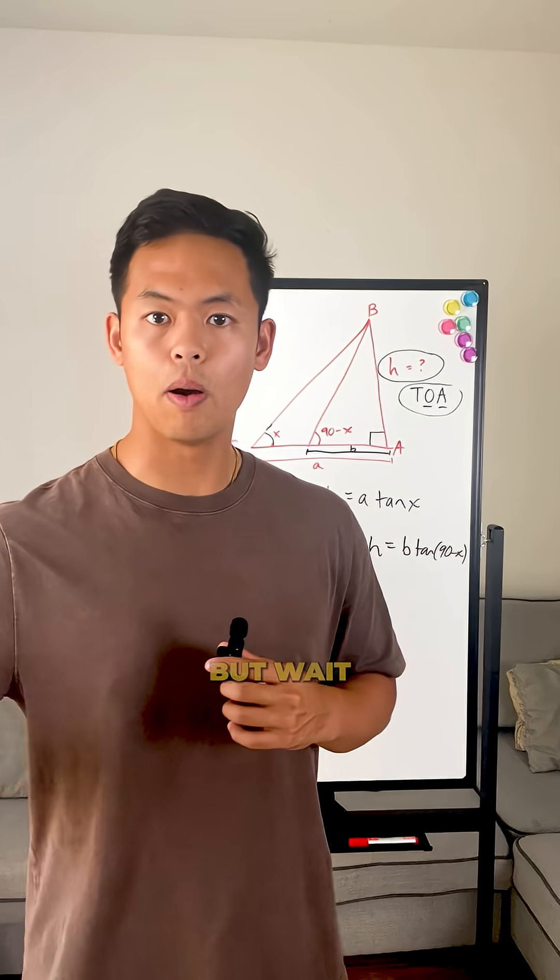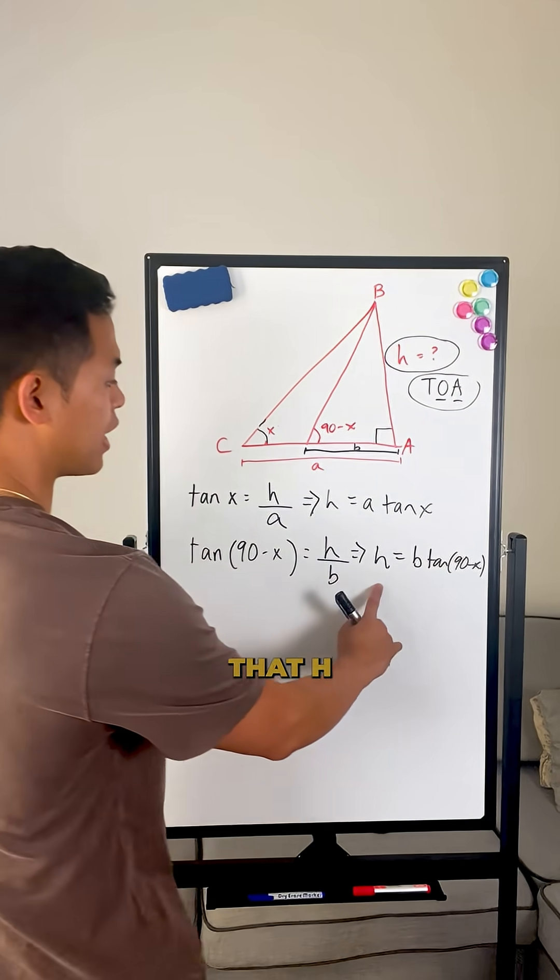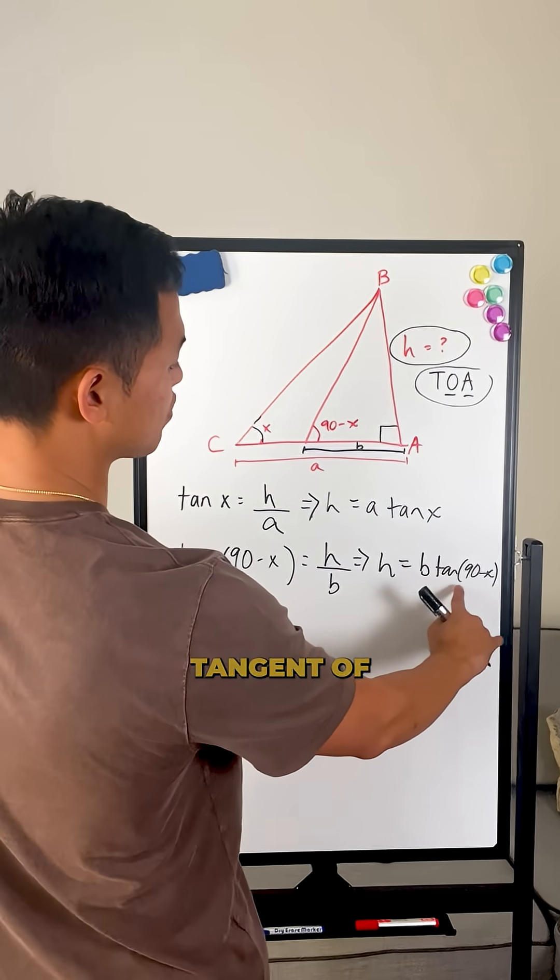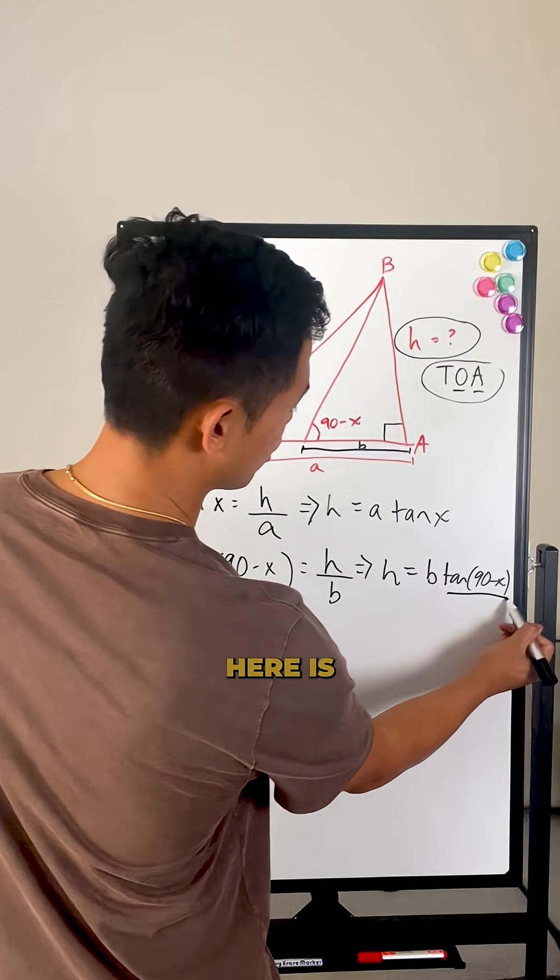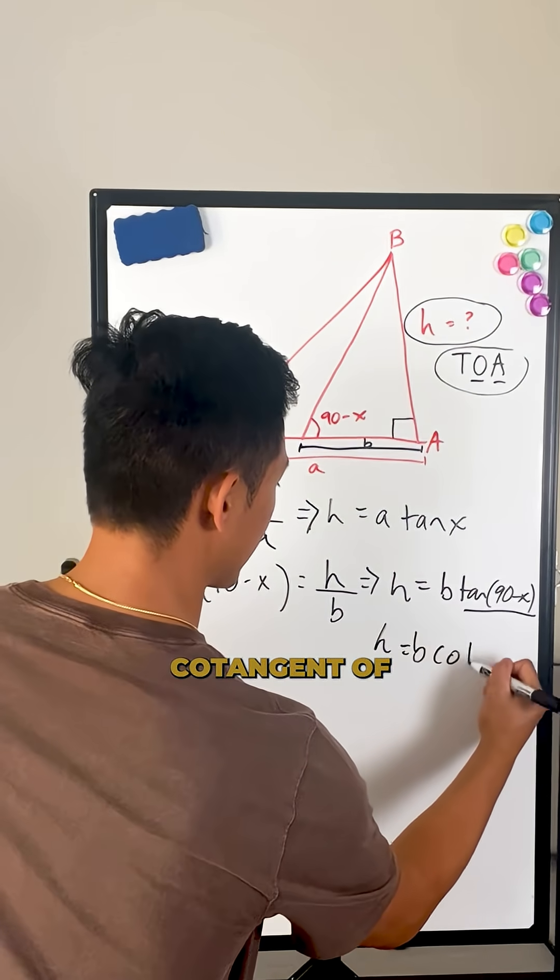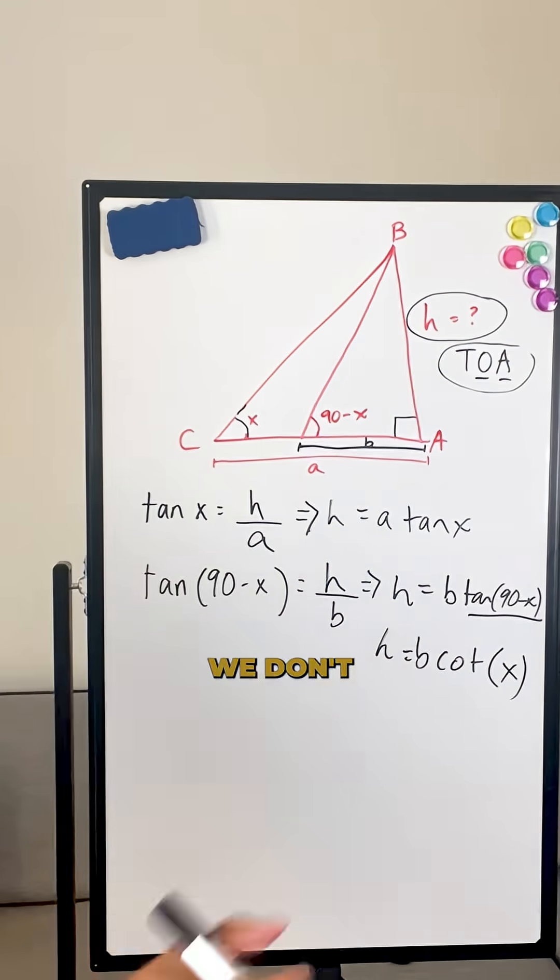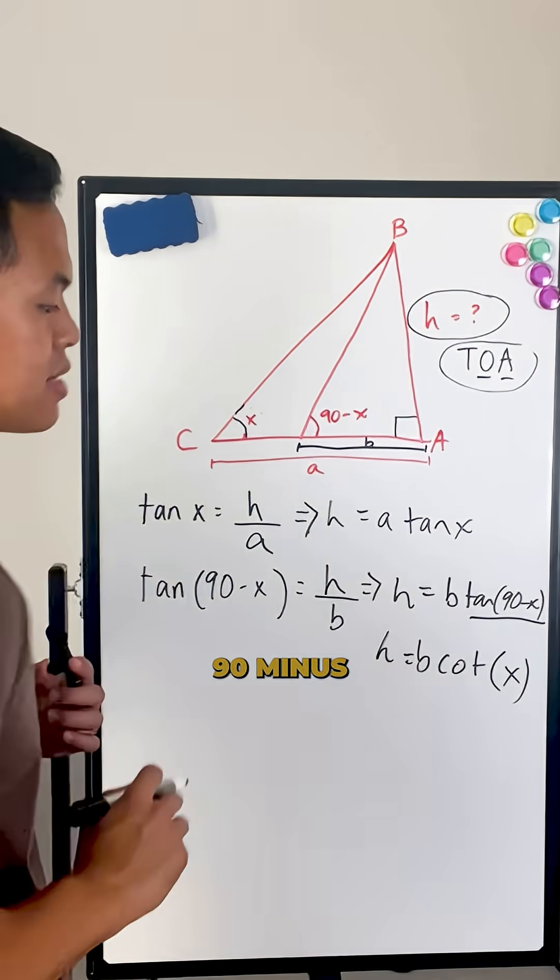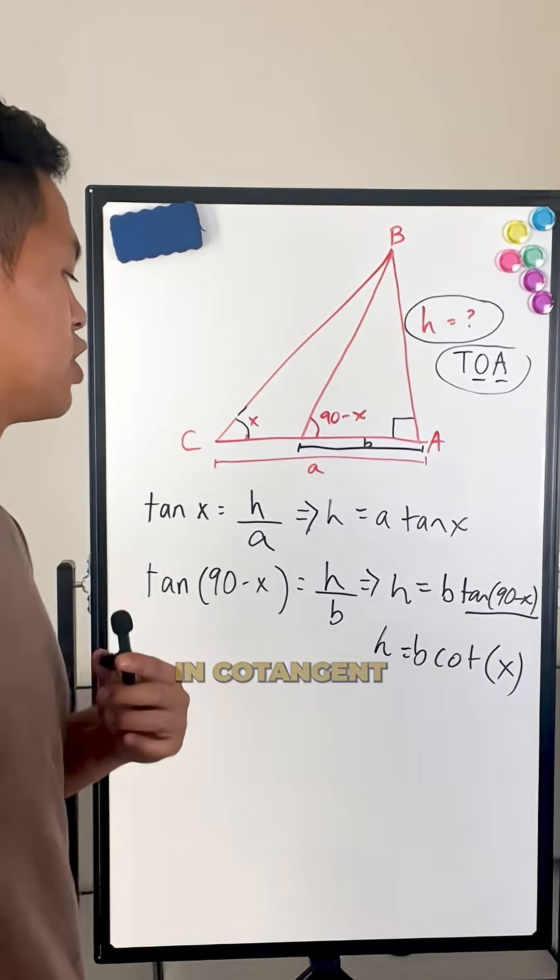You're with me so far? But wait, we can do something to make our lives a lot easier. We know that H equals B times tangent of 90 minus X. This right here is a property. You can call this H equals B times cotangent of just X. So now we don't have to deal with that 90 minus X term anymore. We can just deal with it in cotangent.